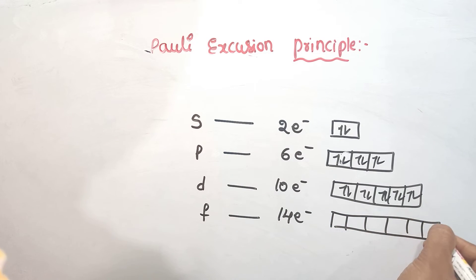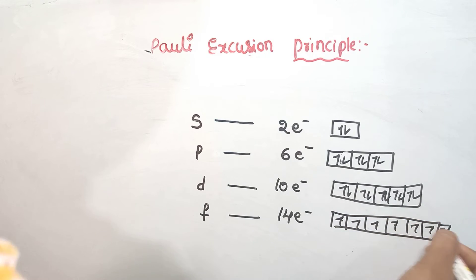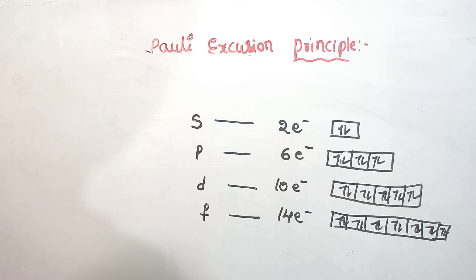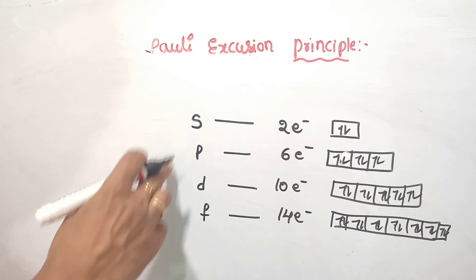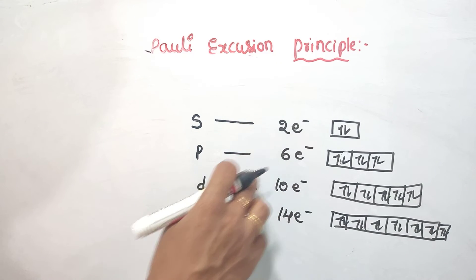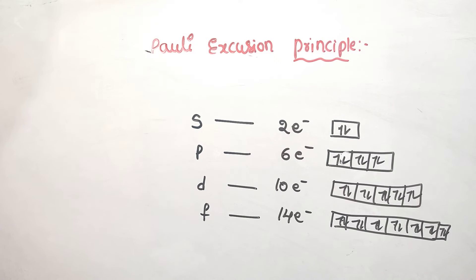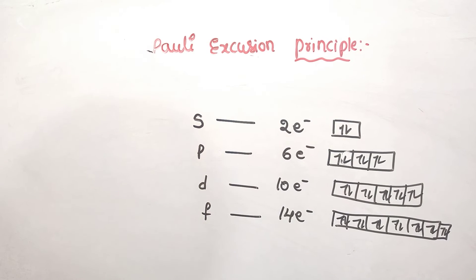So summarizing: the s orbital holds 2 electrons, p orbital holds 6 electrons, d orbital holds 10 electrons, and f orbital holds 14 electrons. This is the Pauli Exclusion Principle.